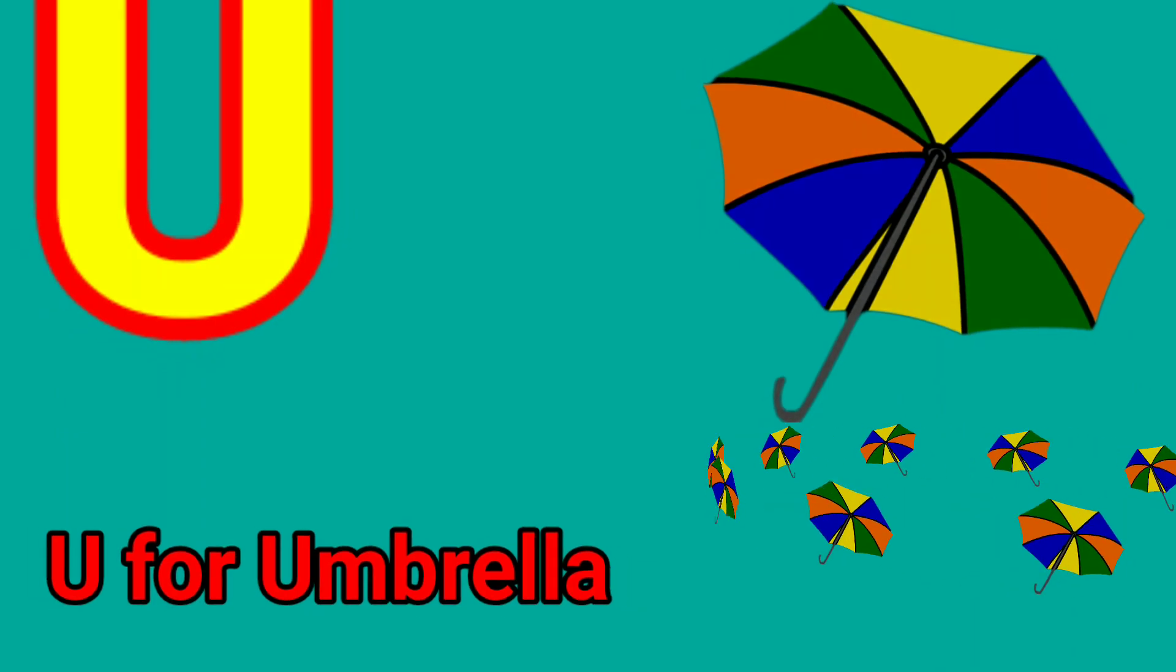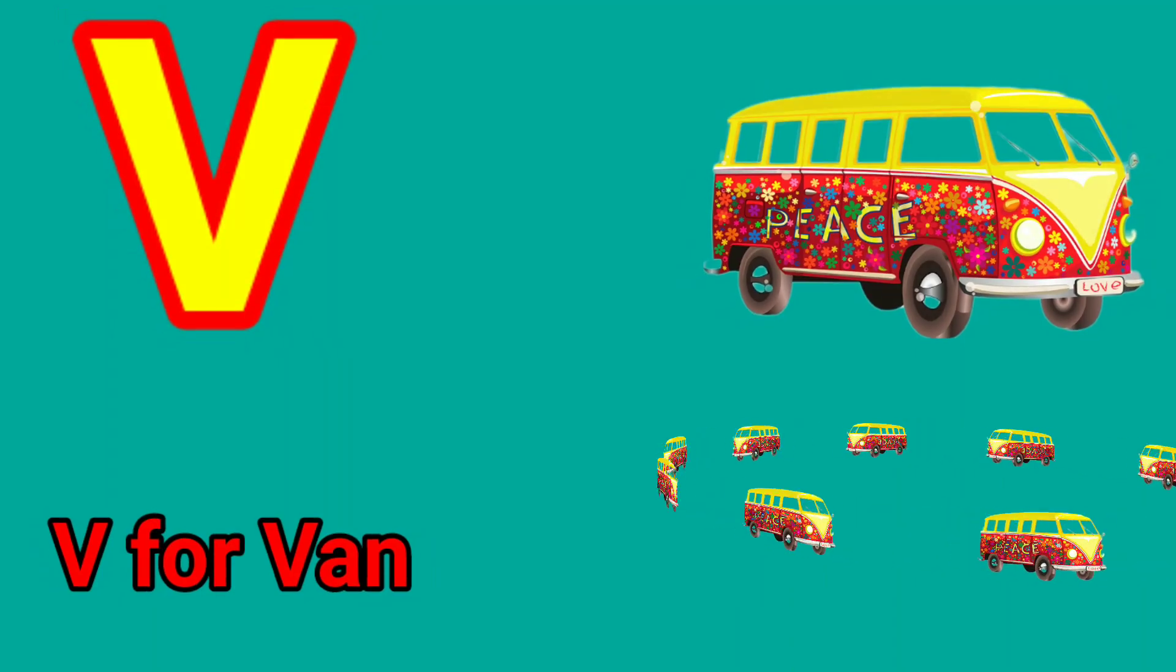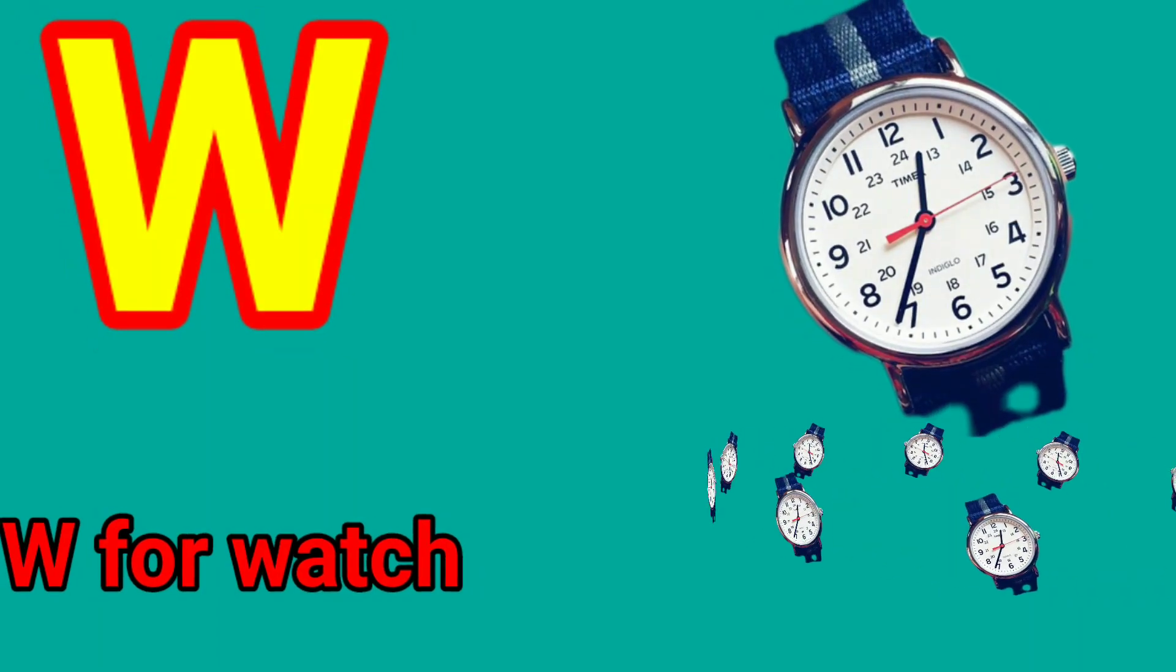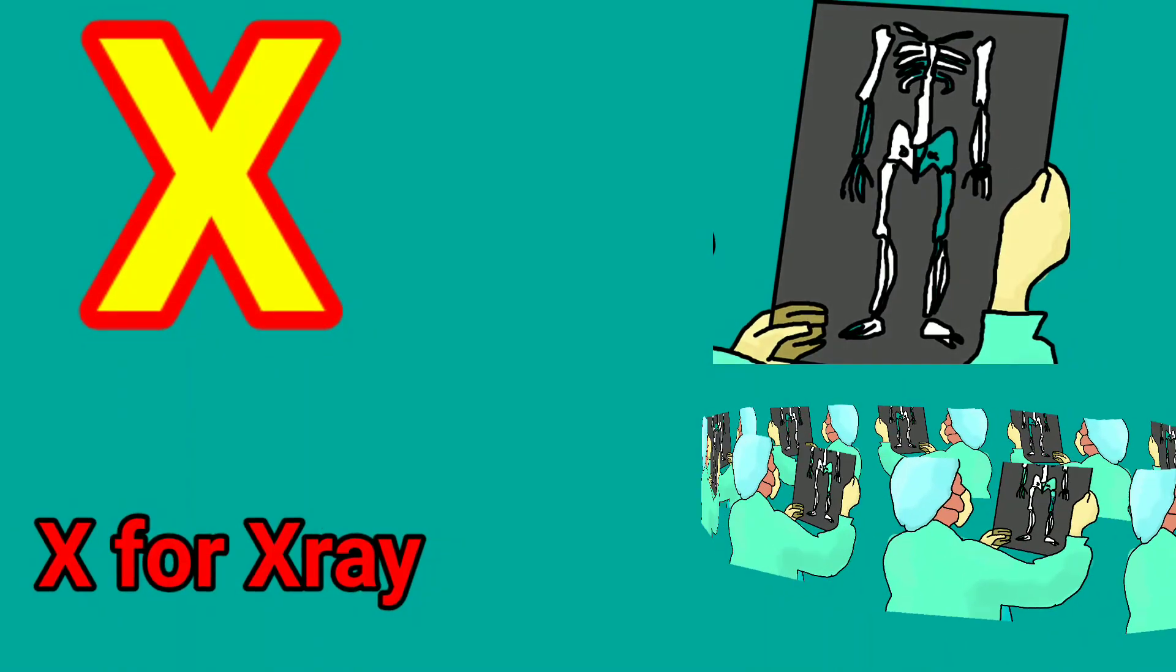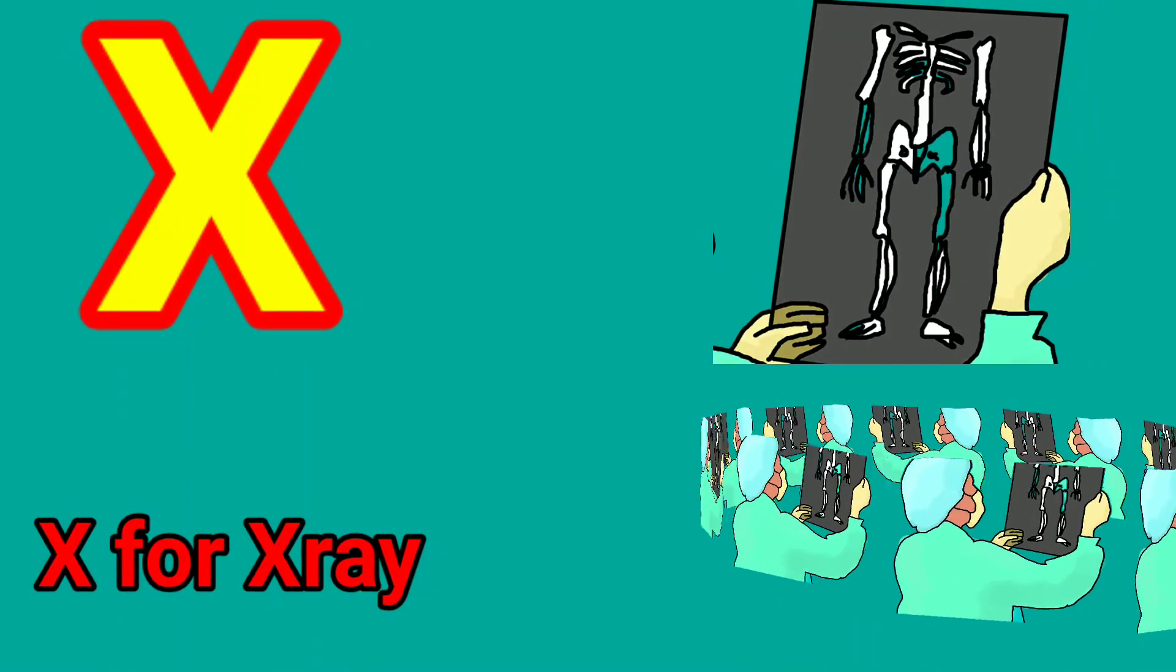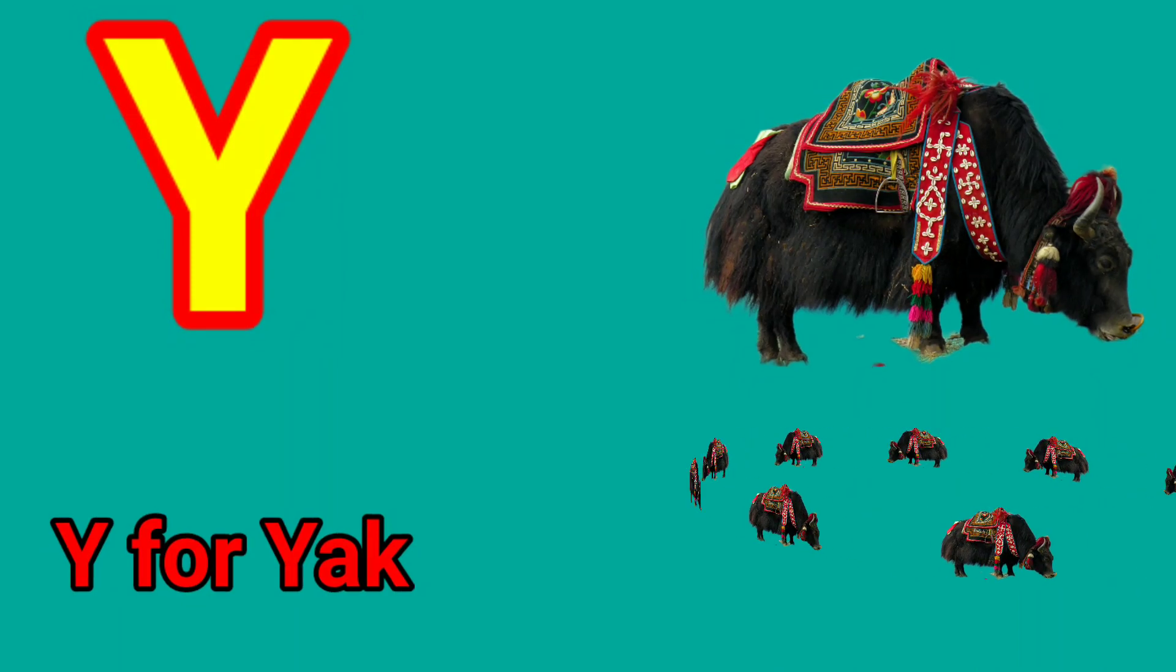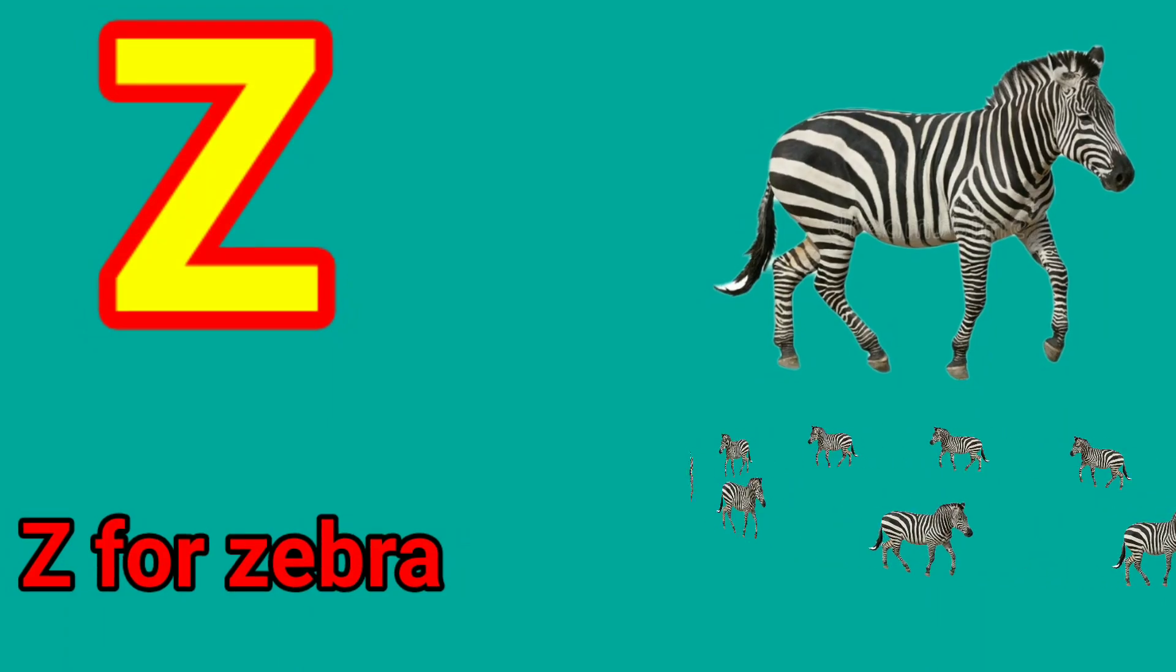U for Umbrella, V for Van, W for Watch, X for X-ray, Y for Yak, Z for Zebra.